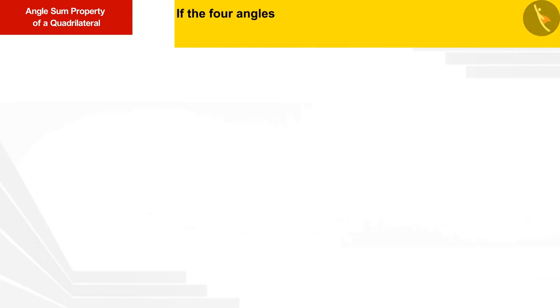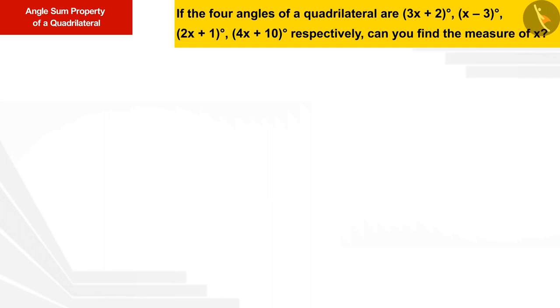If the four angles of a quadrilateral are (3x + 2)°, (x - 3)°, (2x + 1)°, (4x + 10)° respectively, can you find the measure of x? We know that the sum of the four interior angles of a quadrilateral is 360 degrees.